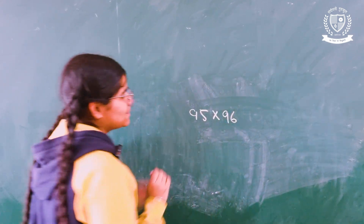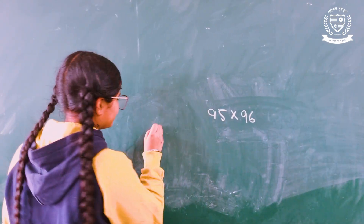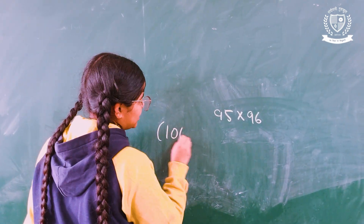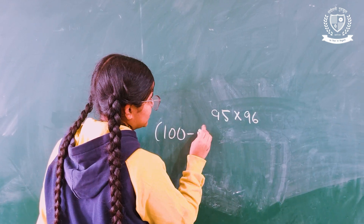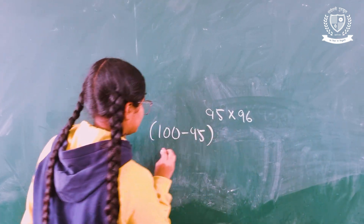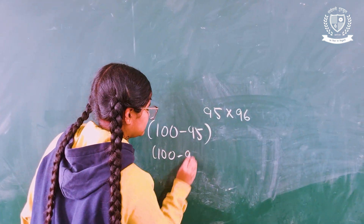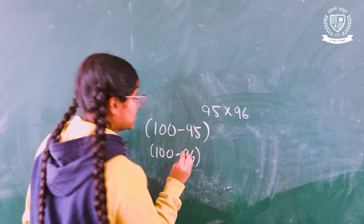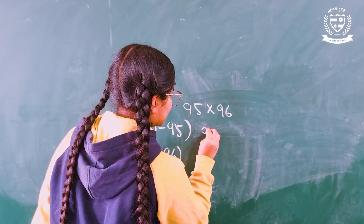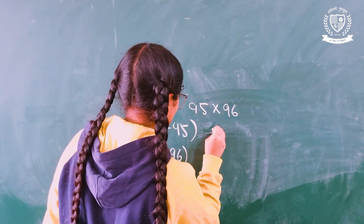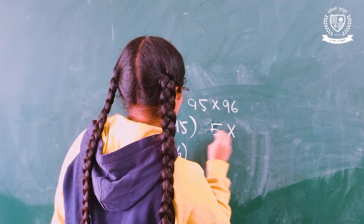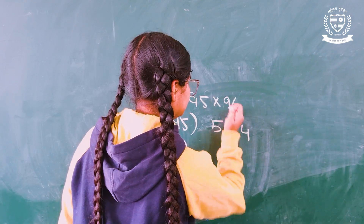As they both are closer to 100, we will subtract 95 from 100 and 96 from 100. 95 will give us 5 and 96 will give us 4.